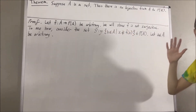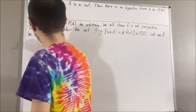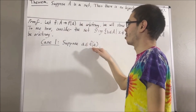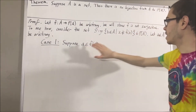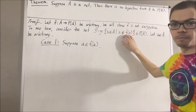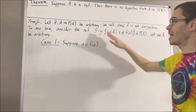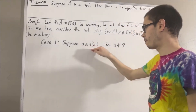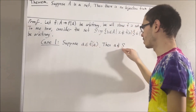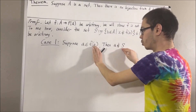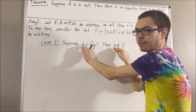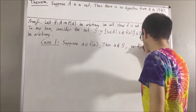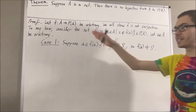Let's first consider the case where a is an element of F(a). If a is an element of F(a), then a doesn't satisfy the requirement to be an element of S. So a can't be an element of S. Since a is an element of F(a) and a is not an element of S, there's no way that F(a) and S can be equal to each other — they don't share the same elements. One of them contains a, the other doesn't. So this completes case 1.